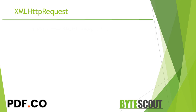To use the XMLHttpRequest object, we first create an instance of it using any variable name we want. In this case, say XHR.